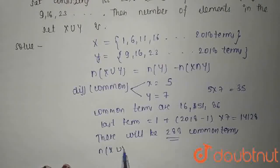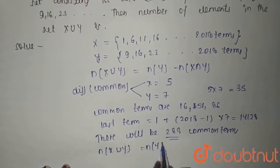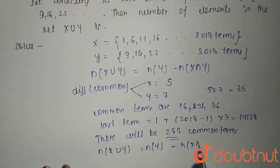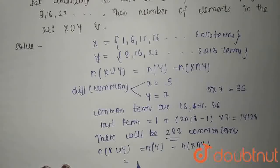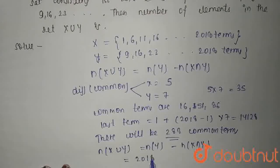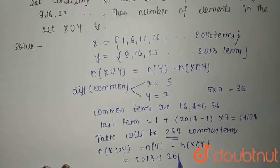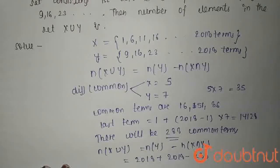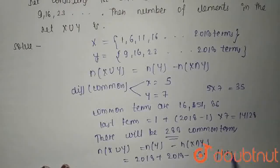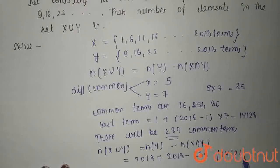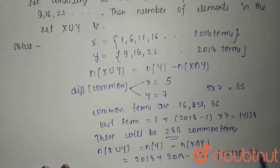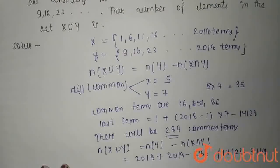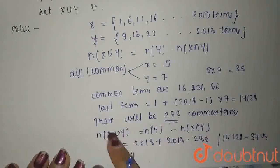So n(X union Y) equals n(X) plus n(Y) minus n(X intersection Y). So 2018 plus 2018 minus 288.